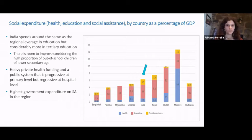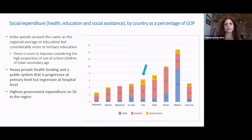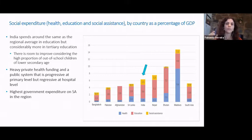In the health sector, India spends lower than the regional average — only 3% of general government revenue, while the regional average is 7%. Government spending per capita has more than doubled since 2005, which is positive. However, out-of-pocket spending represents 65% of total health expenditure, hampering access for vulnerable households. India has one of the highest incidences of catastrophic out-of-pocket health expenditure — more than 10% of the population spends more than 10% of their income on healthcare, and 3.9% spend more than 25% of household income on that.